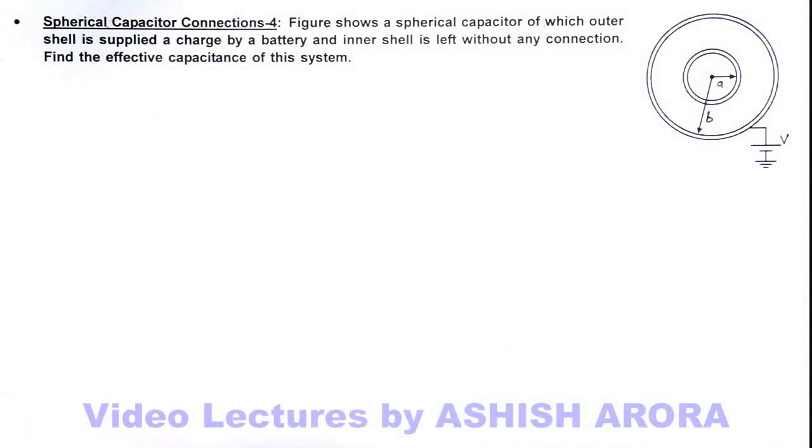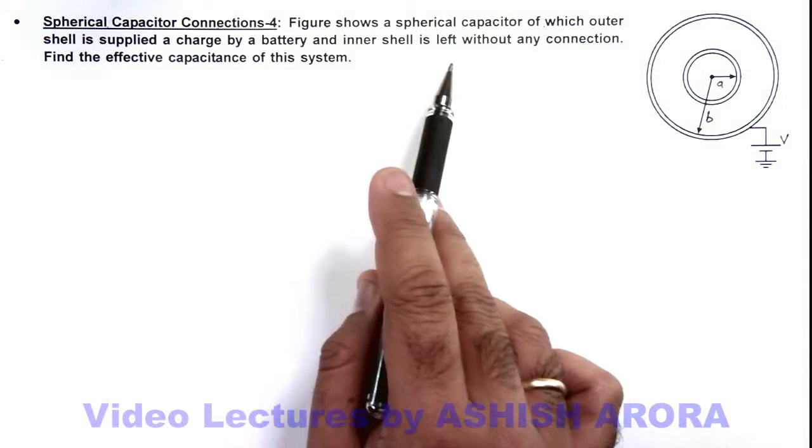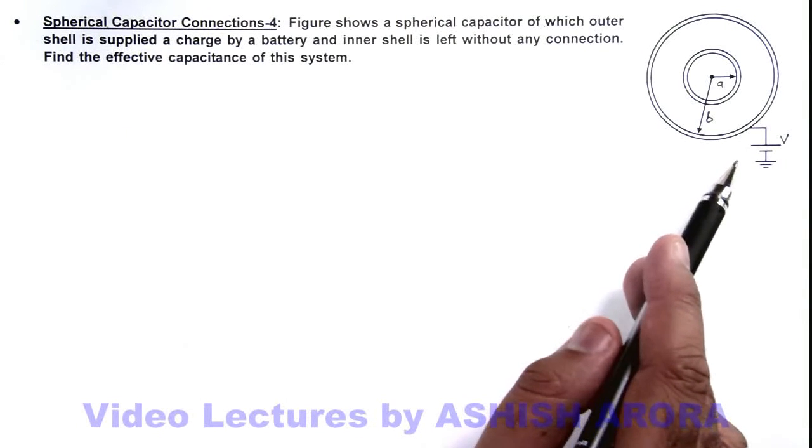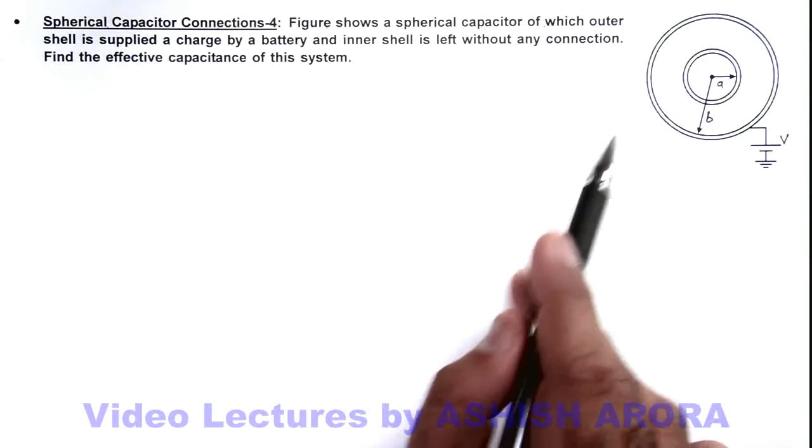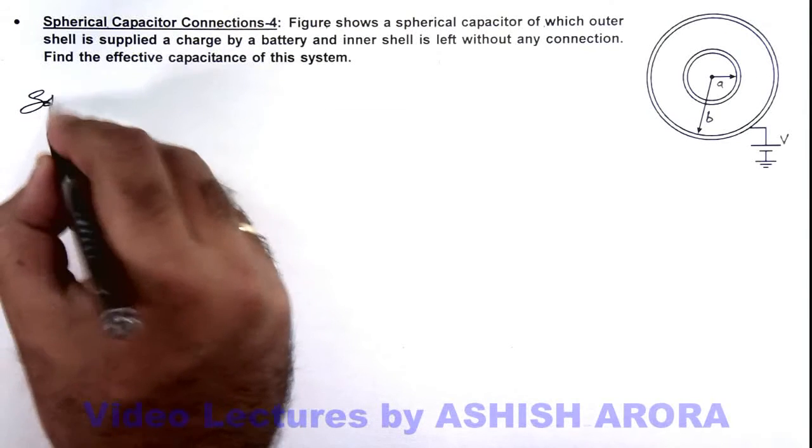In this illustration we can see another connection of a spherical capacitor. Here we are given that the figure shows a capacitor of which the outer shell is supplied a charge by a battery, and the inner one is left without any connection. We are required to find the effective capacitance of this system.